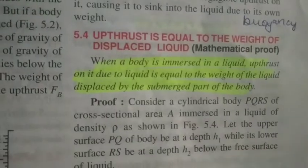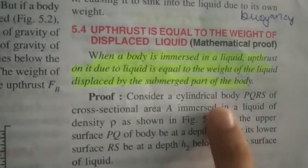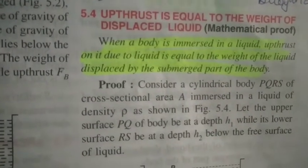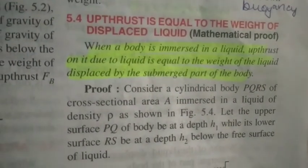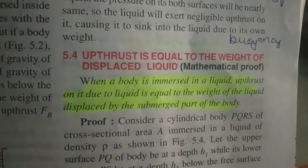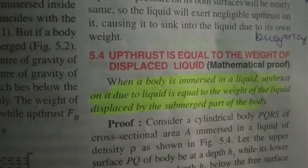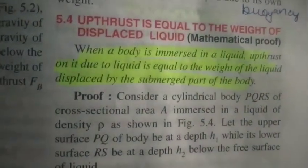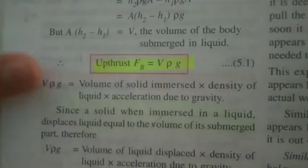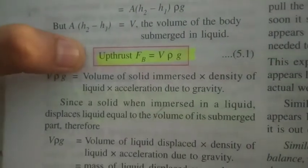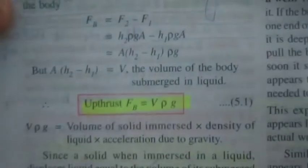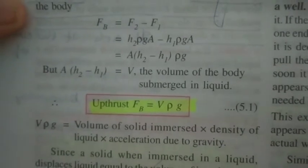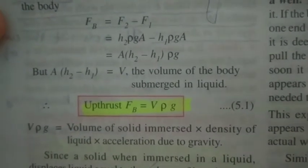Upthrust is equal to the weight of the displaced liquid. If any body is immersed in a liquid, remember that upthrust is always equal to the weight of the liquid displaced by it. From this, we can derive a formula: Upthrust = Volume of body × Density of liquid × Acceleration due to gravity. This is the formula you are going to use in your numerical problems.